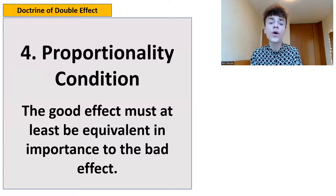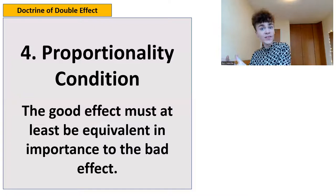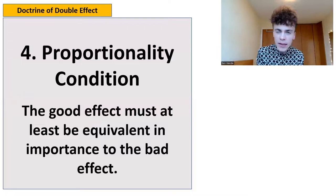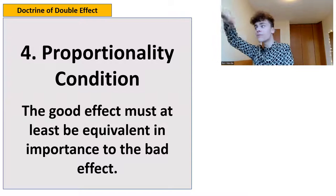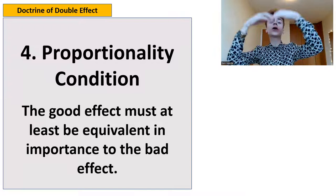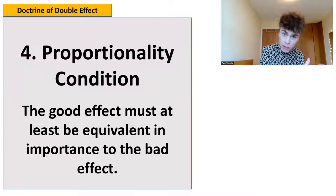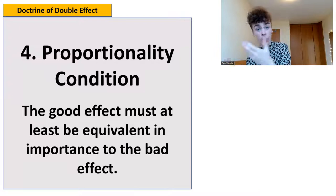Finally, number four is the proportionality condition: the good effect must at least be equivalent in importance to the bad effect. The bad side effect cannot outweigh the good intended effect. You cannot say the good effect I intend is justified by having some massive bad side effect — it's got to be in proportion. You've got to be contributing to an overall goodness in the end. The good needs to be in a higher proportion than any bad unintended but foreseeable side effects.